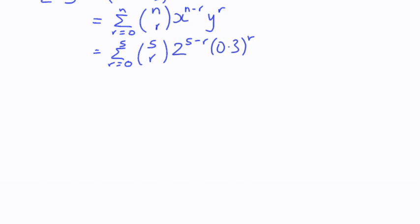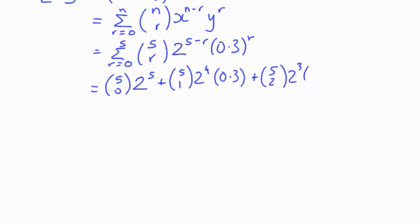We've got 5 choose 0 times 2 to the power 5, plus 5 choose 1 times 2 to the power 4 times 0.3, plus 5 choose 2 times 2 cubed times 0.3 squared, plus 5 choose 3 times 2 squared times 0.3 cubed.